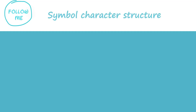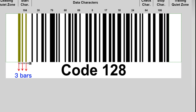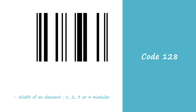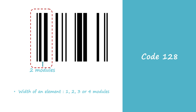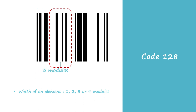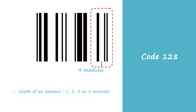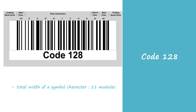In Code 128, each symbol character comprises six elements including three bars and three spaces. You can see here the three bar elements and three space elements in the sample barcode. The first element is always a bar. The width of an element can be one, two, three, or four modules. Using this symbol character as an example: a bar and space of one module, two modules, three modules, and four modules. The total width of a symbol character must be 11 modules.